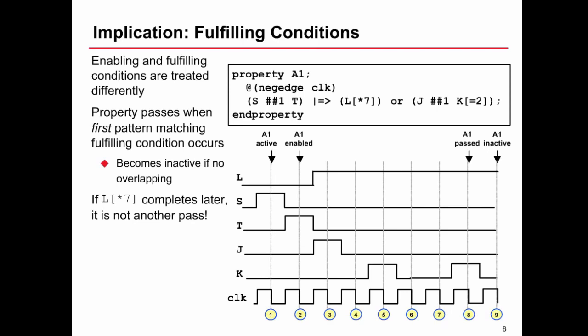At cycle eight, the assertion will pass because we've had two occurrences of k. Now, because l went high at cycle three and it remains high until cycle nine, that doesn't indicate another pass of the property, because the property has already been made inactive because it's passed. It doesn't matter to us, it has no effect at all on the simulation that we had seven consecutive occurrences of l.